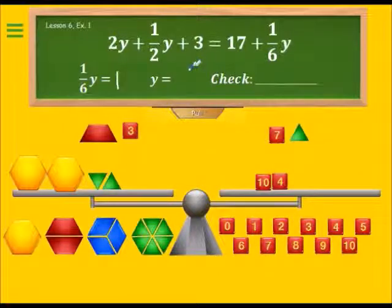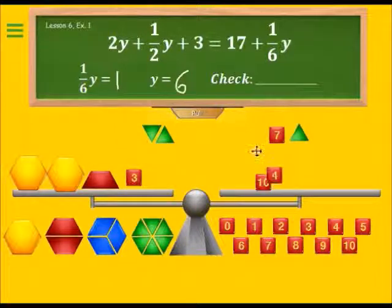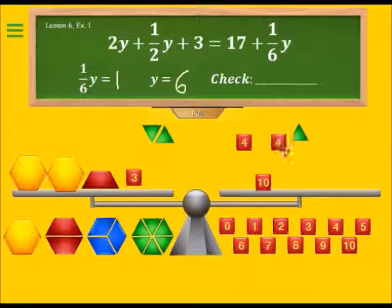In order to do the check, we need to go back to the original physical setup. So we have two y plus half of y plus three equal to 17 plus one-sixth of y.